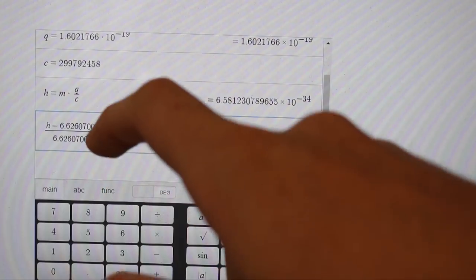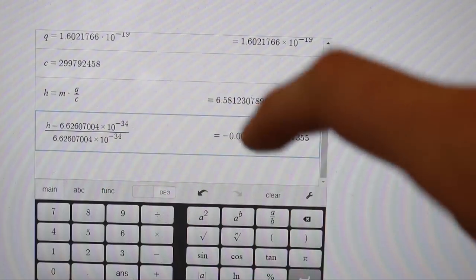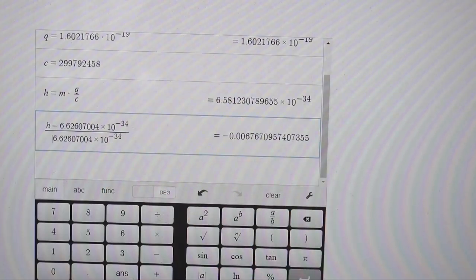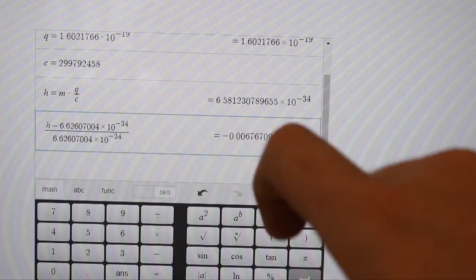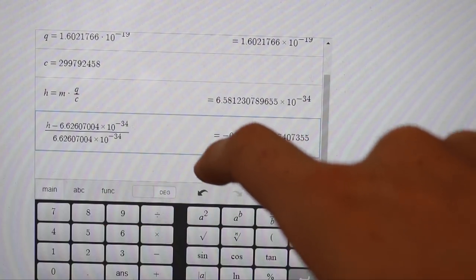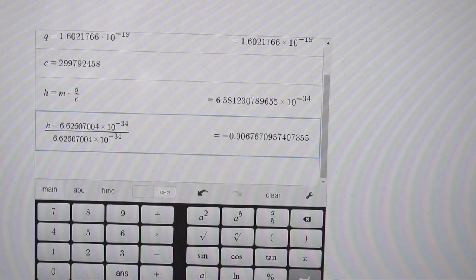And this is very close to the real value, because the real value is 6.62607, about anyways, times 10 to the negative 34th. So if we take our value minus the real value divided by the real value to get our percent error, we only get a percent error of around 0.67%, which is very good accuracy for measuring by hand and with calipers. So yeah, this is quite a good experiment to try and derive out what Planck's constant should be.